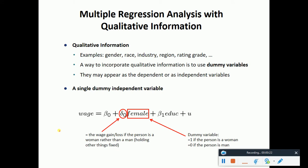What is qualitative information? Examples are gender, race, industry, region, rating grade. A way to incorporate qualitative information is to use a dummy variable. They may appear as the dependent or as independent variables.